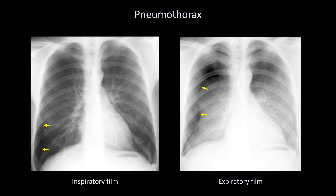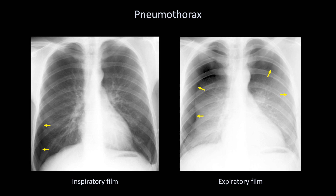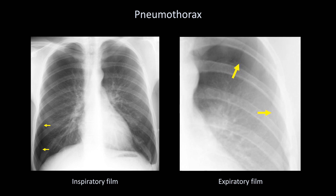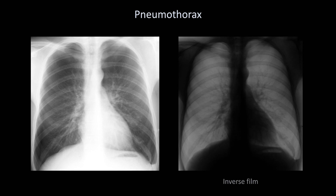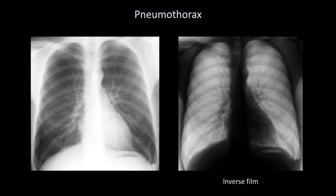In fact, if we look closely, we can actually see another pneumothorax on the opposite side, which was not clearly evident on inspiration. Another trick that is sometimes used is to look at the inverse image of the chest X-ray. Compare the right-sided pneumothorax on the conventional view with that on the inverse view. I personally don't find this helpful, but many people do.